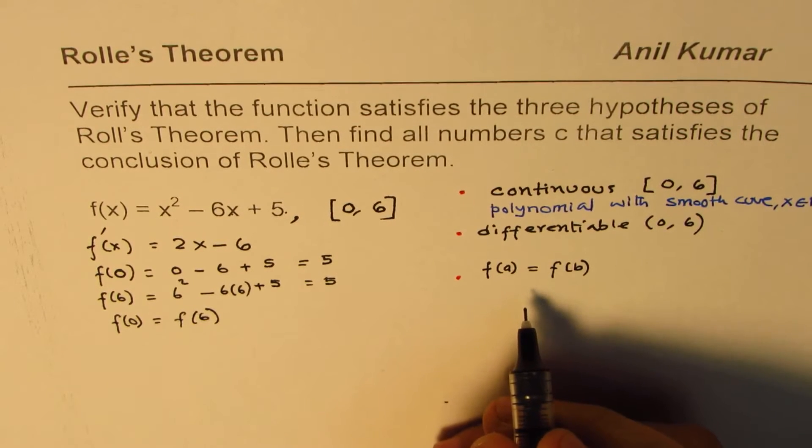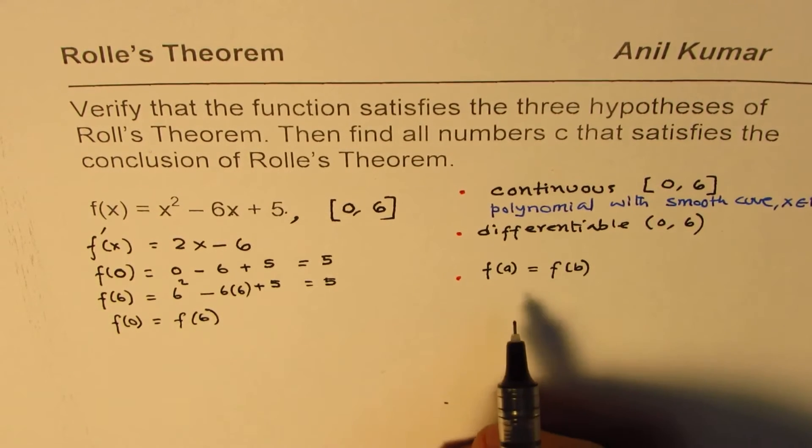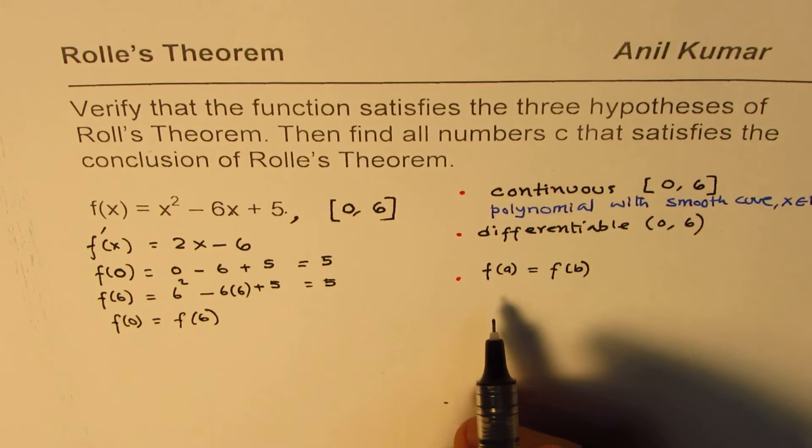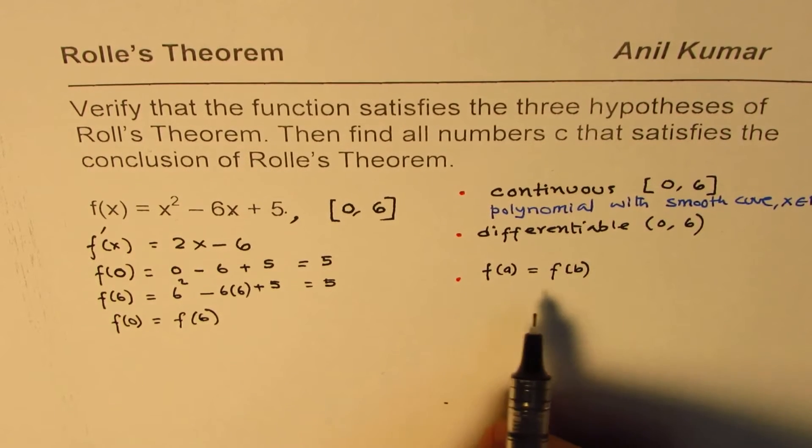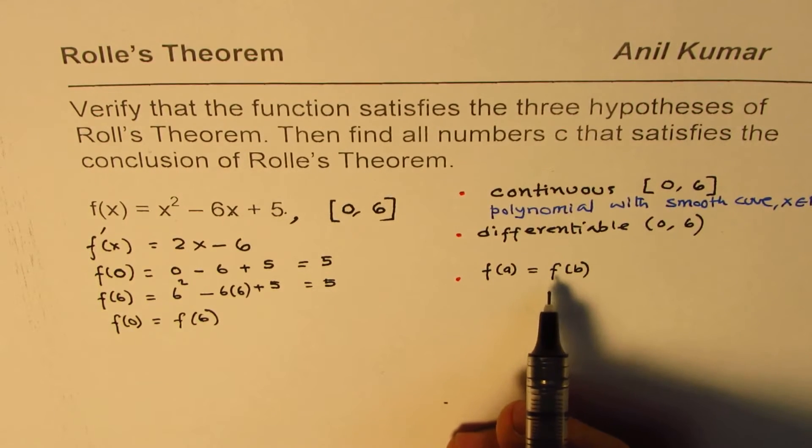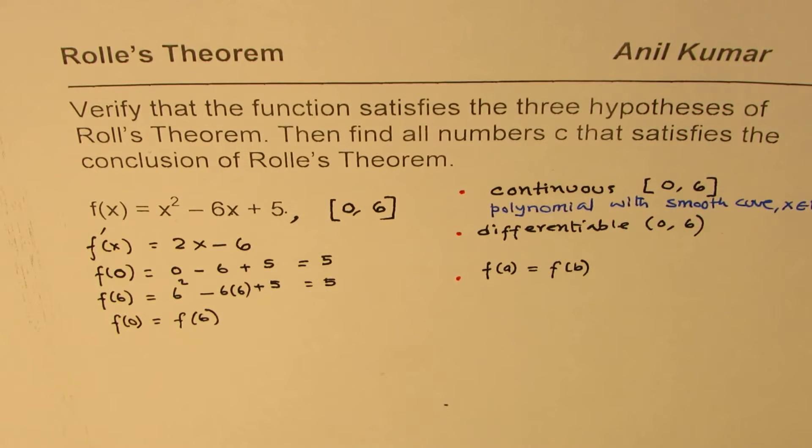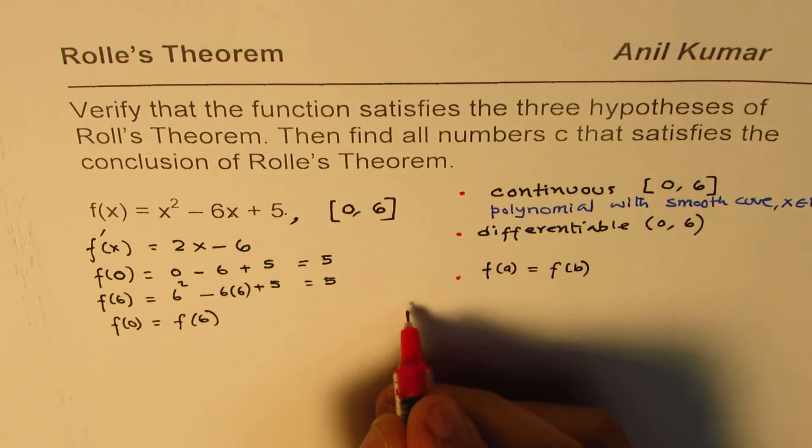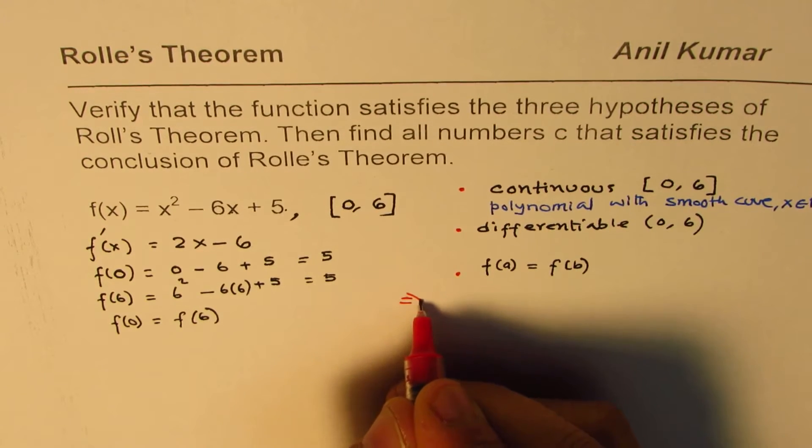So, these three conditions are satisfied. Rolle's theorem says then there is a number c in this open interval such that f'(c) is 0. So, in that case...